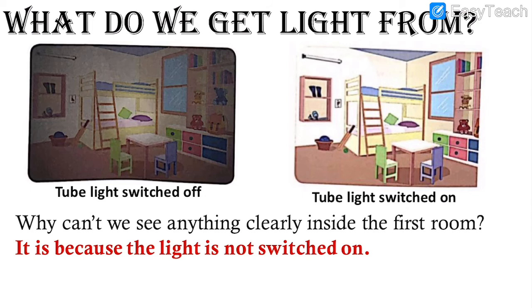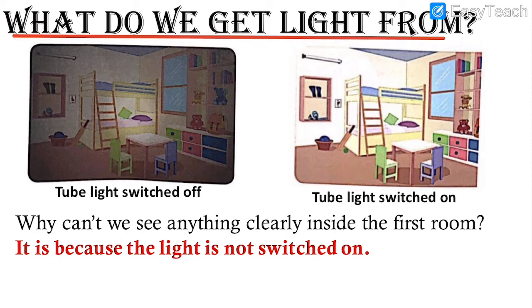Now look at these two images — are they the same? Yes, both images are the same, but what is the difference? The question asked here is: what do we get light from? This is a tube light which is switched off in the first image, and here the tube light is switched on — we can see two different images.